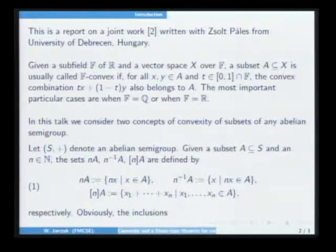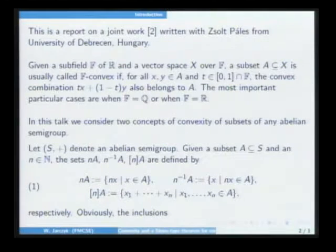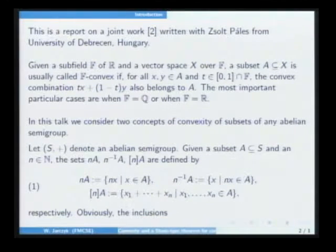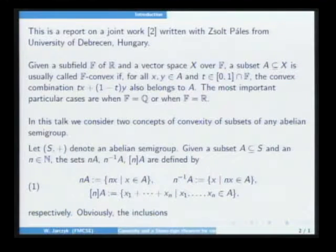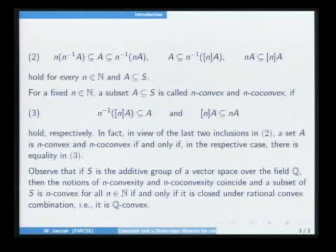Here, S-plus will denote an abelian semigroup. If we have an arbitrary subset A of S and an arbitrary positive integer N, we have three set operations denoted by NA, N-inverse times A, and N-brackets A, defined by formula one. Obviously, we have the following inclusions, inclusions two.